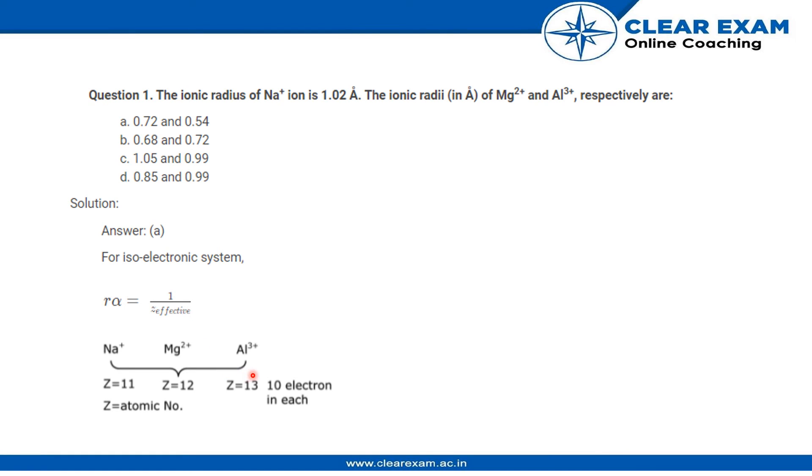Then we have Mg2+ to be a little greater than Al3+, and then we will have Na+ to be the greatest since it has the lowest atomic number.